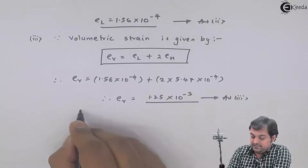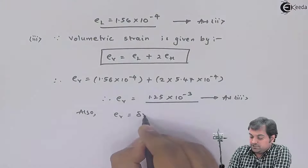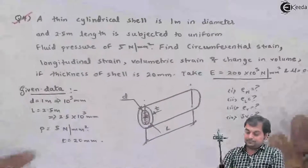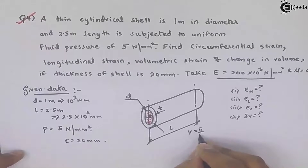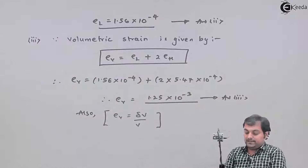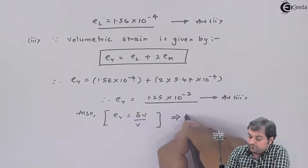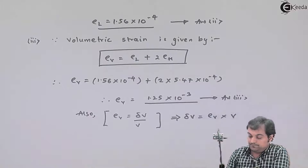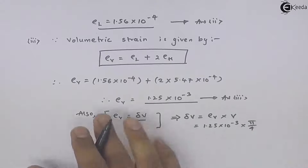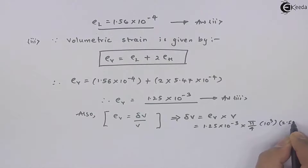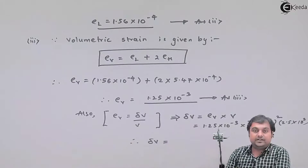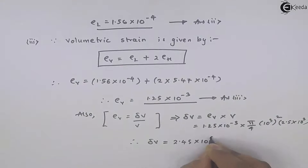The last question asks to calculate change in volume. Volumetric strain = change in volume / original volume. Original volume V = (π/4) × d² × L = (π/4) × 1000² × 2.5×10³ mm³. Therefore, change in volume = volumetric strain × volume = 1.25×10⁻³ × (π/4) × 1000² × 2.5×10³. The change in volume comes out to be 2.45×10⁶ mm³. That is the fourth answer.